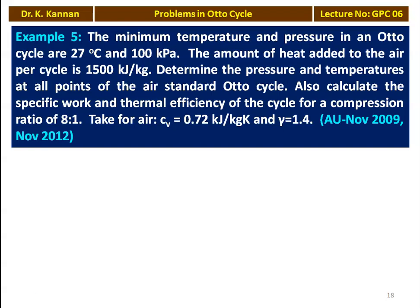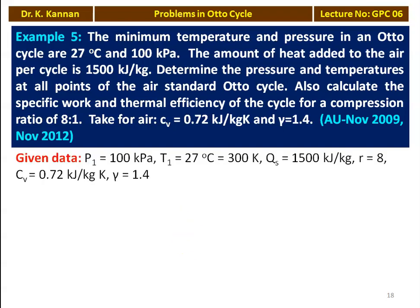Example number 5 from the question paper November 2012. The minimum temperature and pressure of an Otto cycle are 27°C and 100 kPa. The amount of heat added to the air per cycle is 1500 kJ/kg. Determine the pressure and temperature at all points of the air standard Otto cycle. Also calculate the specific work and thermal efficiency for a compression ratio of 8. Given: Cv equals 0.72 kJ/kg·K, gamma equals 1.4, T1 equals 300 Kelvin, heat supplied equals 1500 kJ/kg, R equals 8.